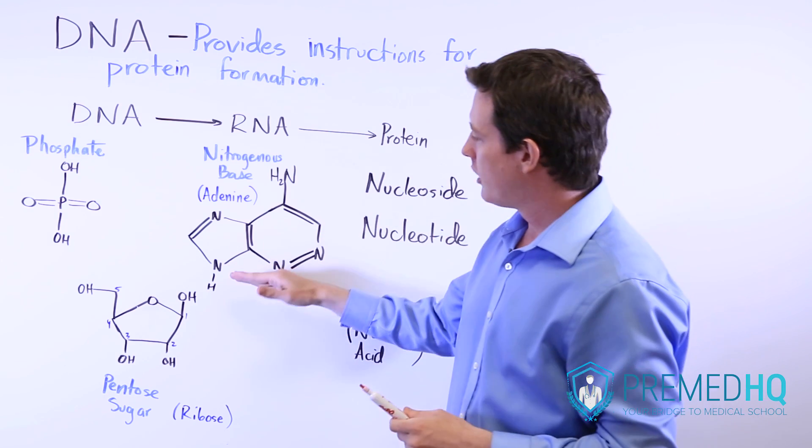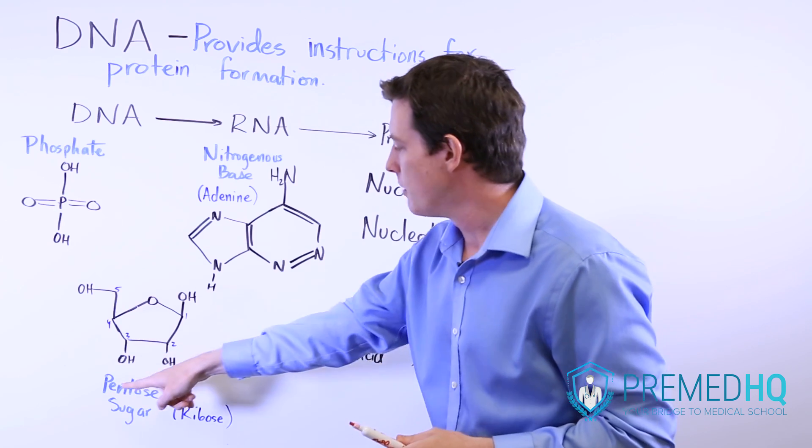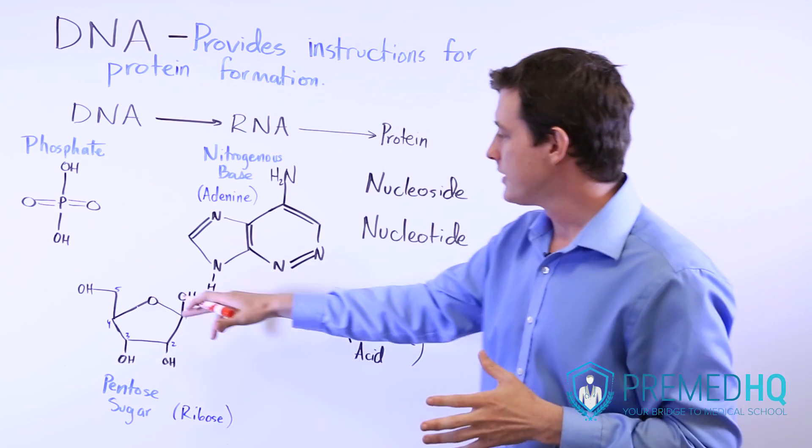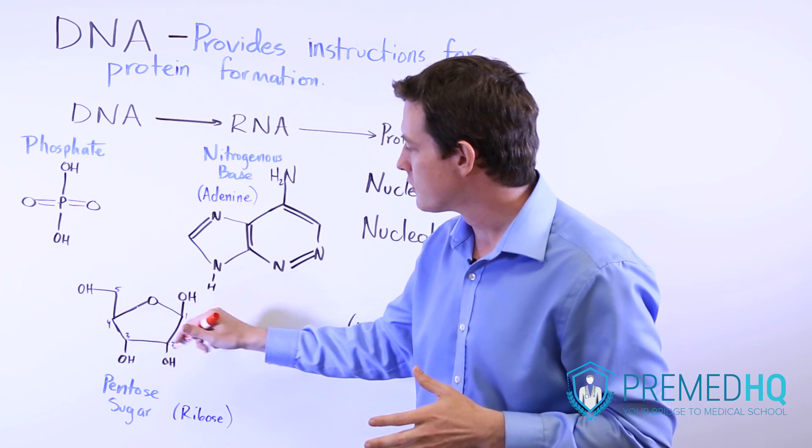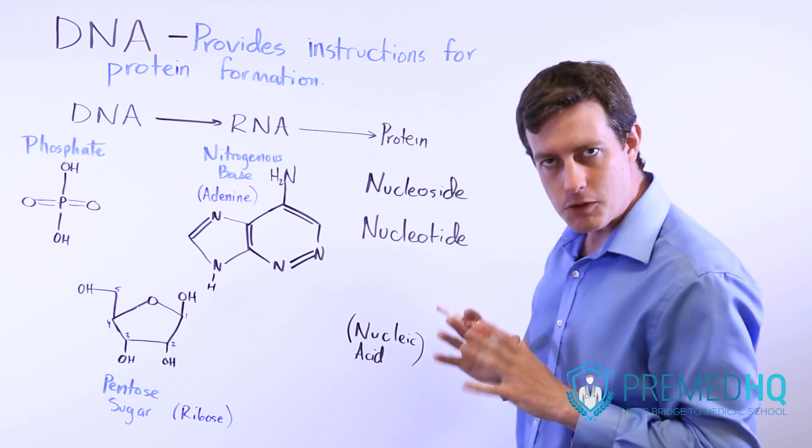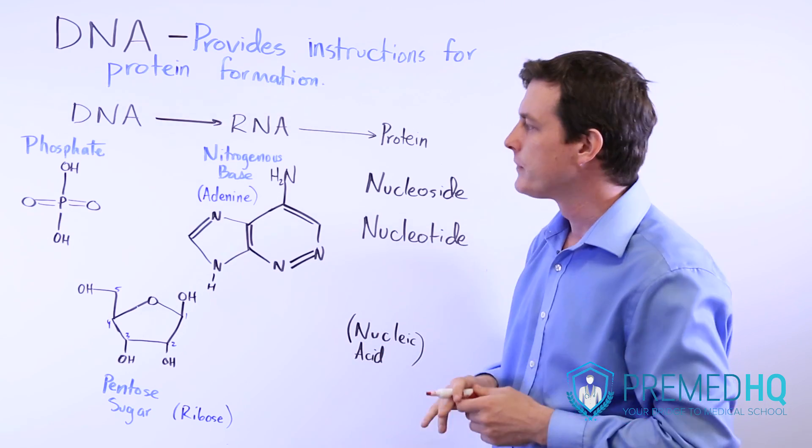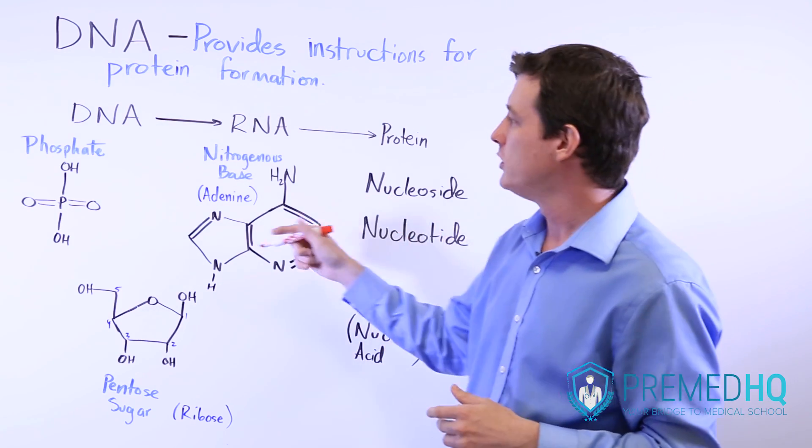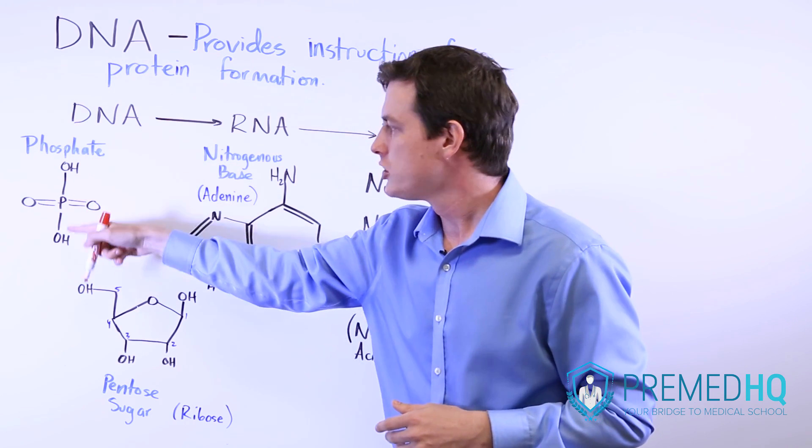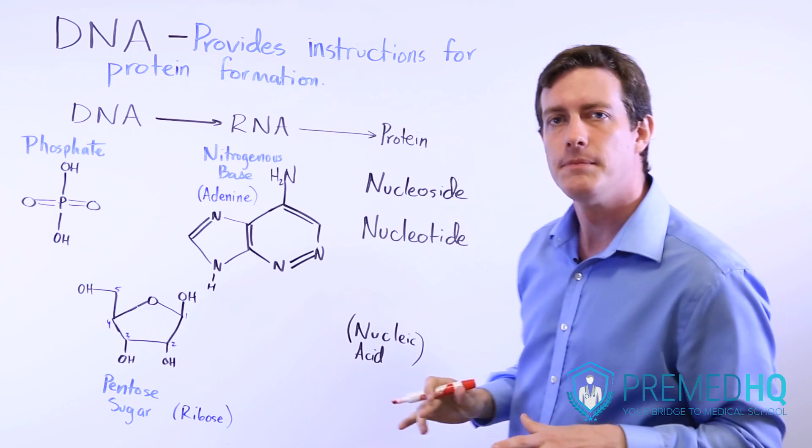That nitrogenous base will be attached to a pentose sugar. It's a pentose sugar because it has a five carbon structure: one, two, three, four, and five right there. So pentose, pent meaning five. The third component of a nucleotide is a phosphate group, which has phosphorus in the middle and then oxygen and OH groups surrounding it.